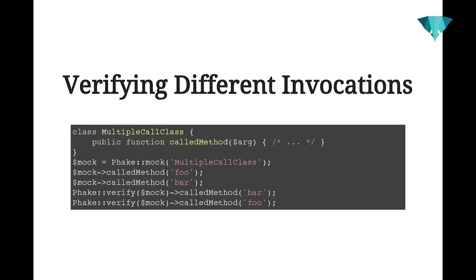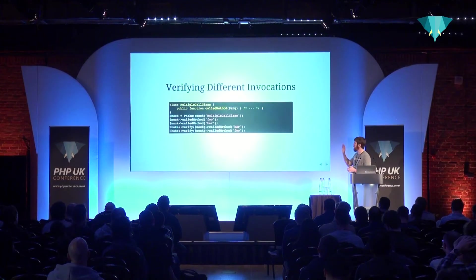You can verify multiple invocations of the same method with different parameter values. I create a mock of the class, invoke the method with two different arguments, then call Fake's verify method specifying the method that should have been called and the argument that should have been passed each time. Note that I'm doing these verifications out of order — Fake doesn't care about that in this context. All it cares about is that the methods were invoked at some point.